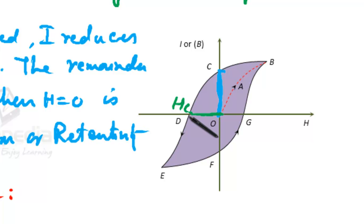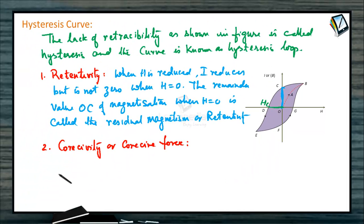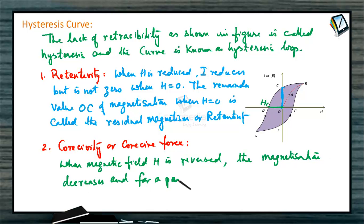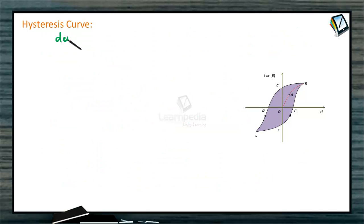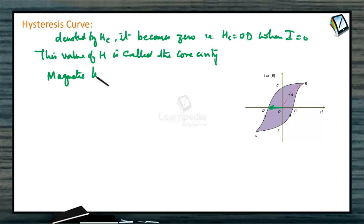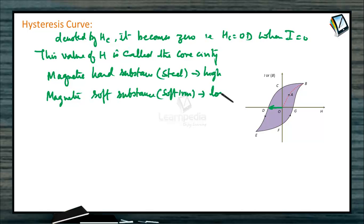Magnetic hard substances such as steel have high coercivity. Magnetic soft substances such as soft iron have low coercivity. When magnetic field H is reversed, the magnetization decreases, and for a particular value of H denoted by HC — that is OD in the figure — it becomes zero. When I is equal to zero, this value of H is called the coercivity.